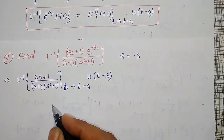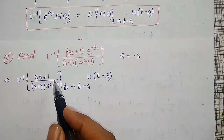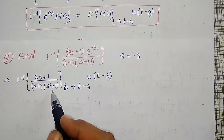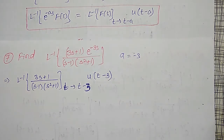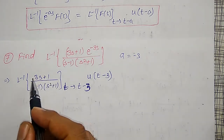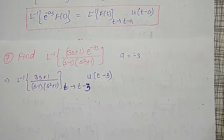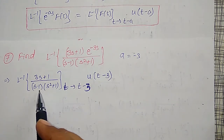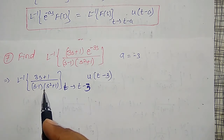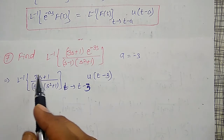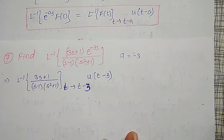This is its inverse Laplace Transform. Here I have to find out inverse Laplace Transform of (3s + 1) divided by (s minus 1)(s squared plus 1). Both terms are in standard forms but as a product, so I will use partial fractions.